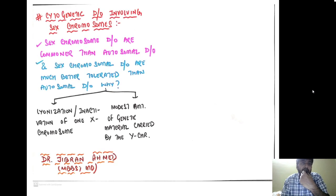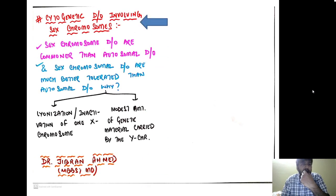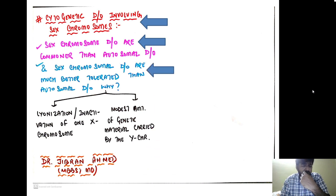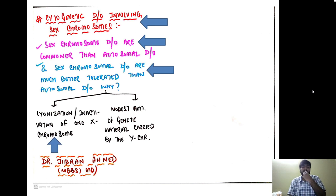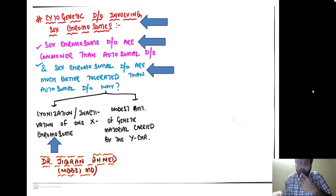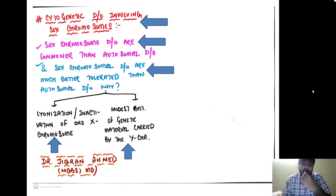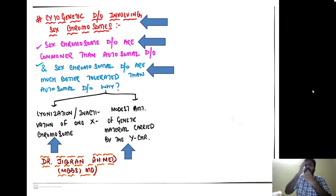Sex chromosomal disorders are much more common and better tolerated than autosomal disorders for two reasons: first, lionization (random inactivation of one X chromosome), meaning abnormalities in the inactivated X will not be expressed; second, the Y chromosome carries very little genetic material, so even if involved there is not much phenotypic abnormality.